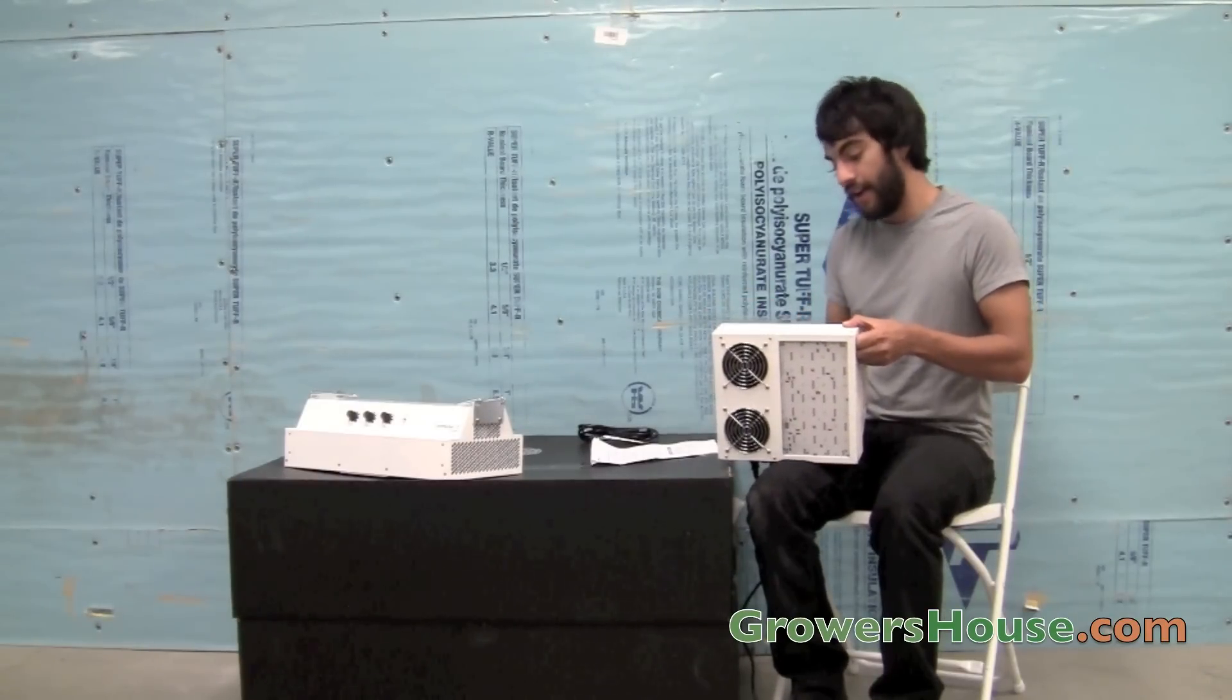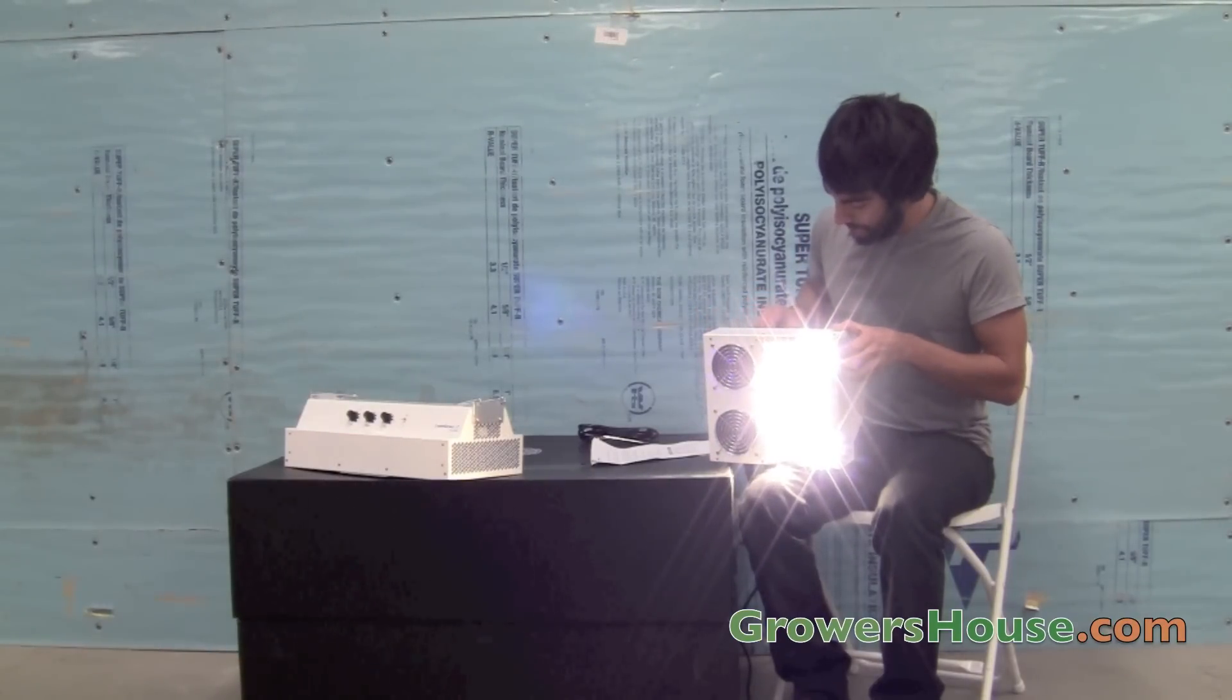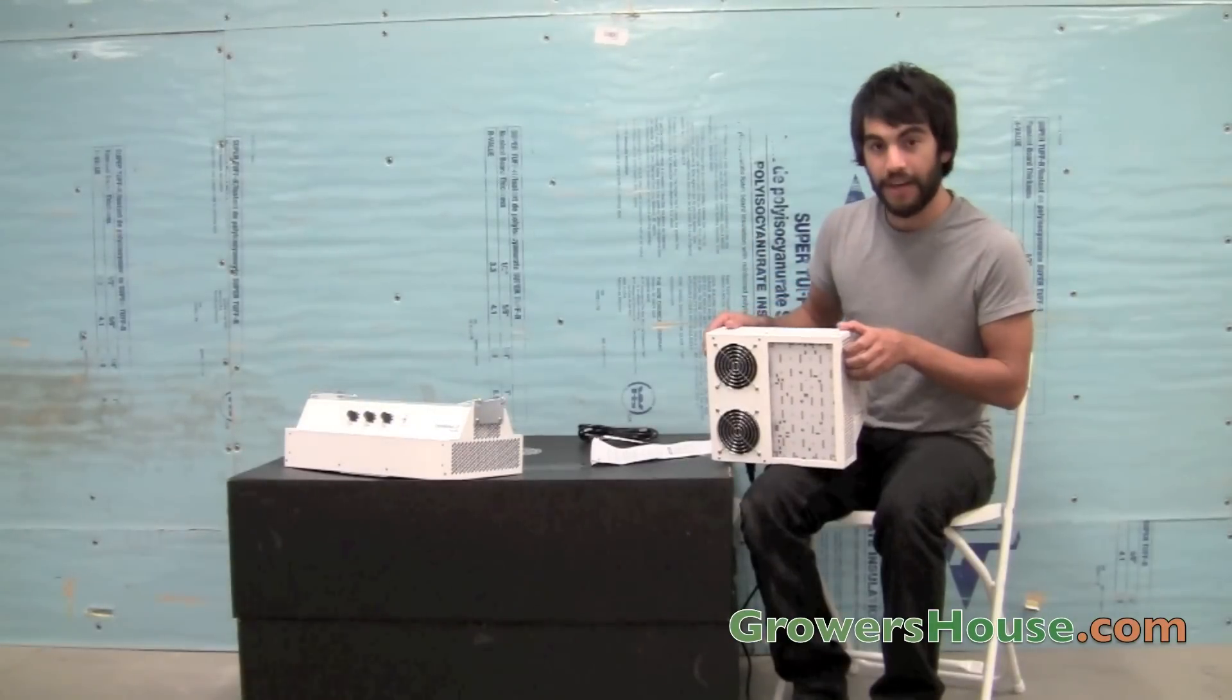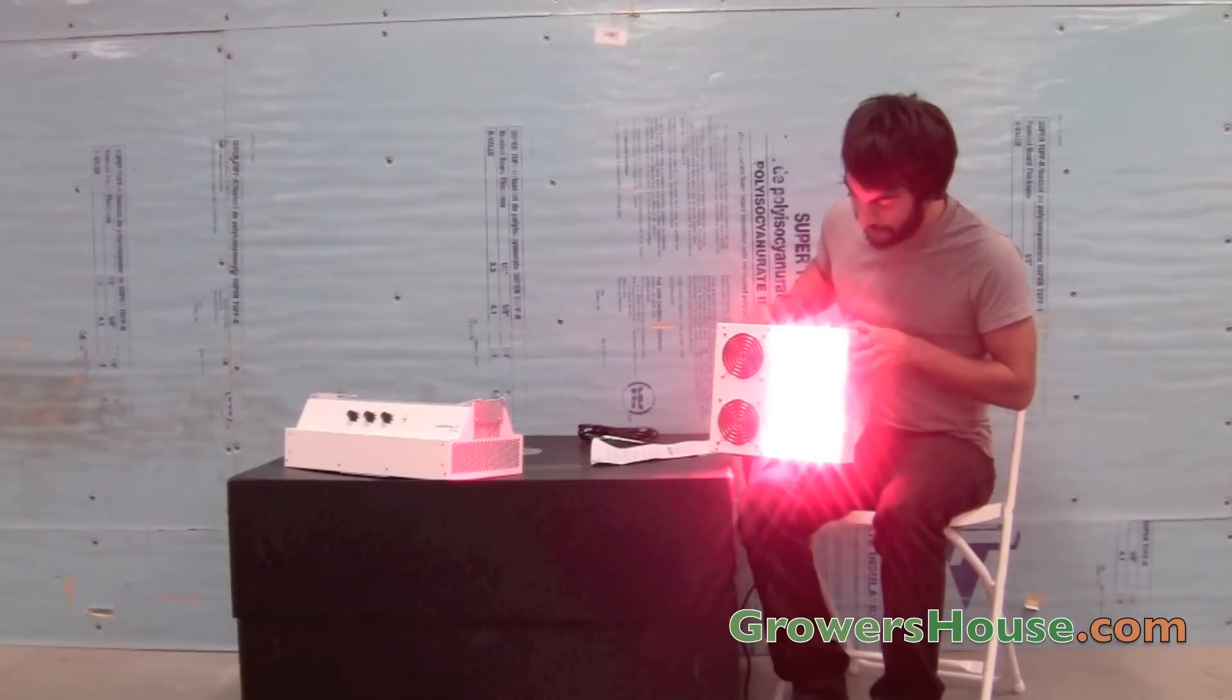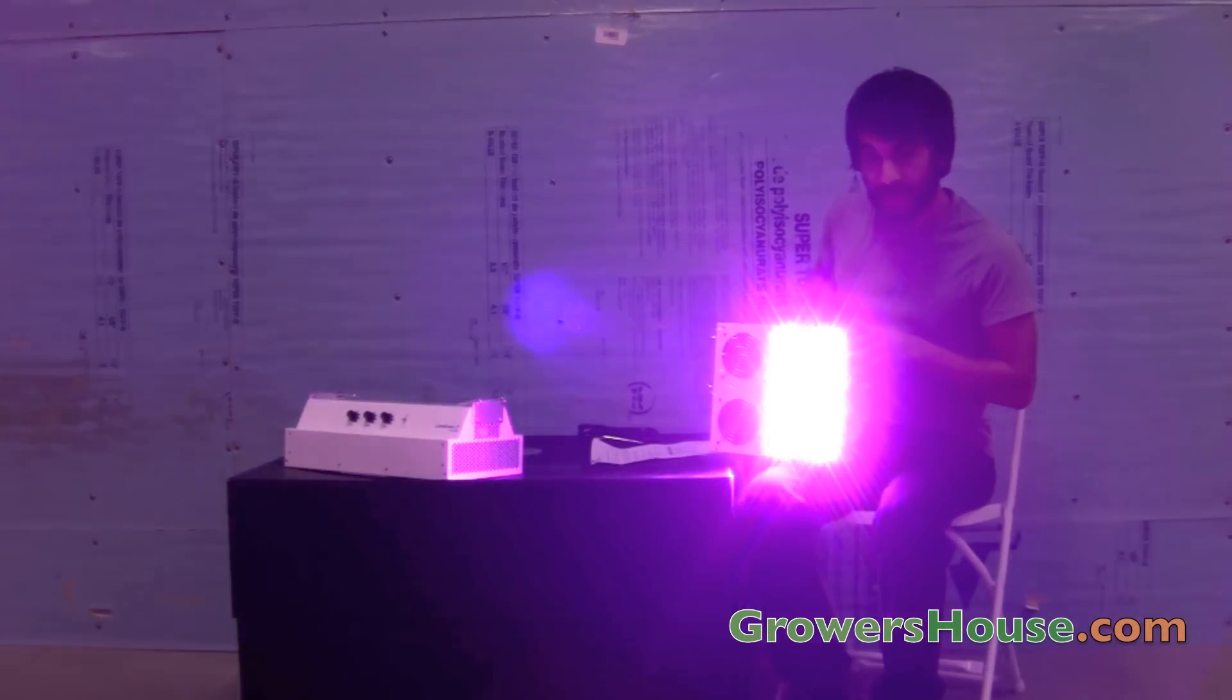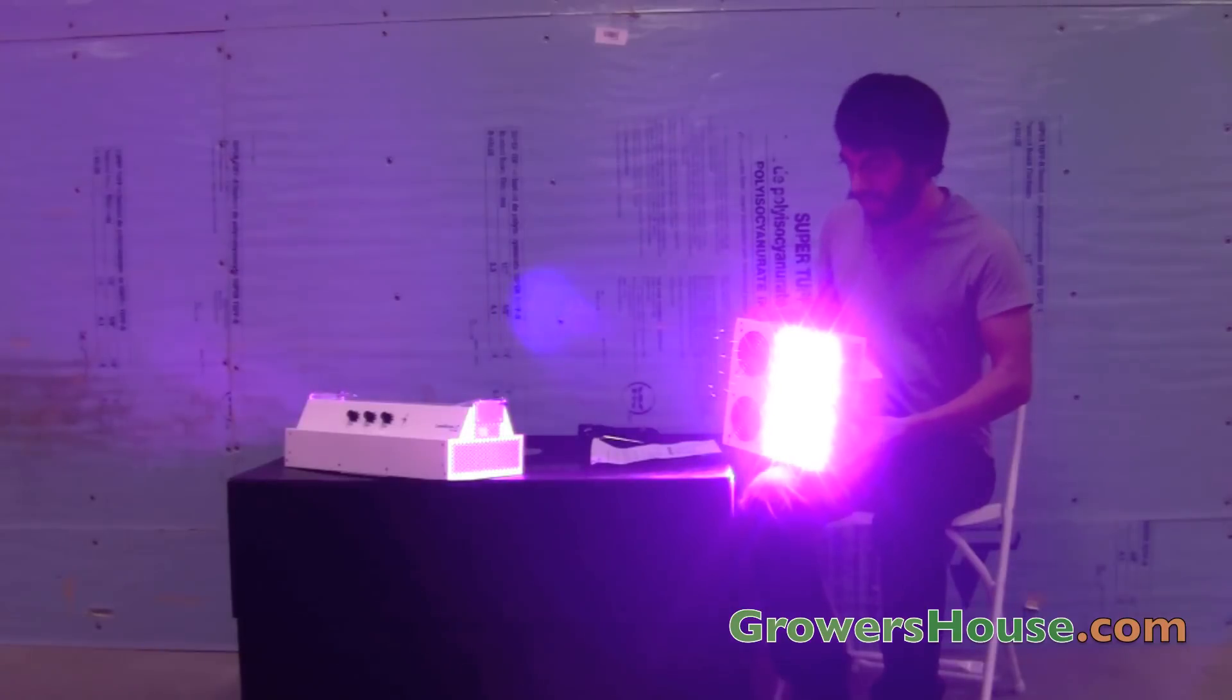Let's go ahead and turn this on. I have it on the setting just for your eyes to look down at the plants below. If I turn into the flower setting with all of these knobs turned to zero, just the fans will be on. Then I'll slowly start turning up the red spectrum, then I'll move on to the white, and now I'll turn on the blue. So there you can see all three units at full intensity.